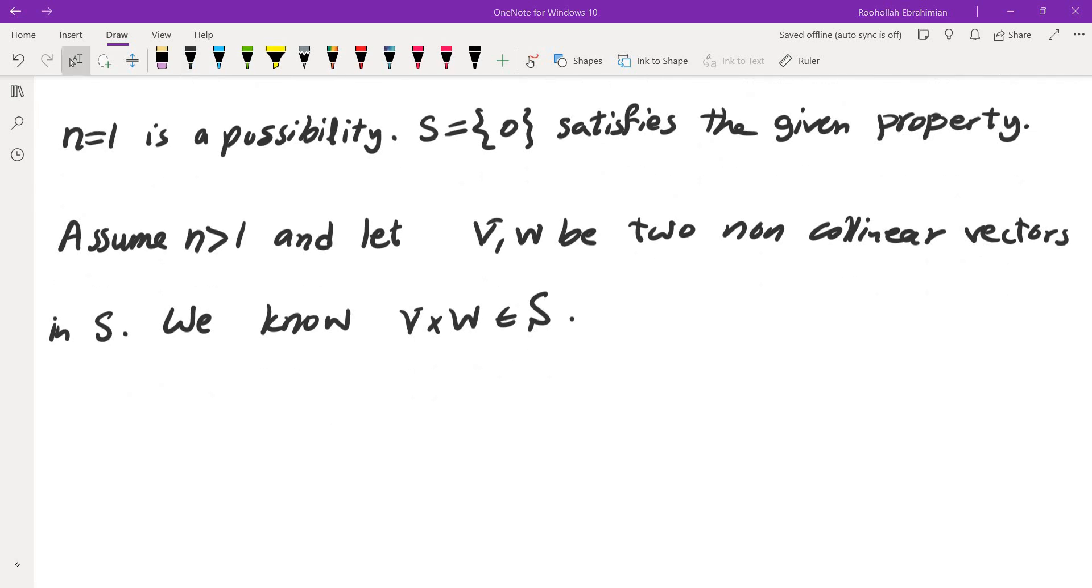V cross W is perpendicular to both V and W. So we would have a vector V, a vector W, and a vector orthogonal to both of these. So this is like V cross W. So we will have at least three different directions.